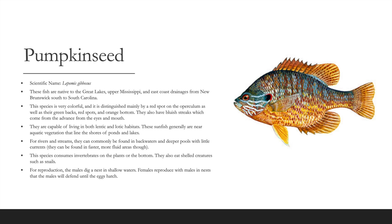The pumpkinseed fish is native to the Great Lakes, Upper Mississippi, and East Coast drainages from New Brunswick to South Carolina. It is very colorful, distinguished by a red spot on the operculum, green backs, red spots, orange bottom, and bluish streaks from the eyes and mouth. Capable of living in both lentic and lotic habitats, they are found near aquatic vegetation along shores, backwaters, and deeper pools. They consume invertebrates and shelled creatures such as snails; males dig nests in shallow water and defend eggs until hatching.